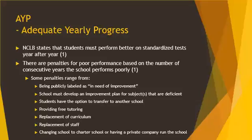Now let's discuss the thing that holds the schools accountable year after year: the AYP, or Adequate Yearly Progress. Penalties are assessed for schools that repeatedly perform poorly for consecutive years, and the penalties increase with each consecutive year the school performs poorly. Penalties range from being publicly labeled as in need of improvement, possible replacement of curriculum or the entire staff, potentially closing the school or changing it to a charter school, or even having it run by a private company.